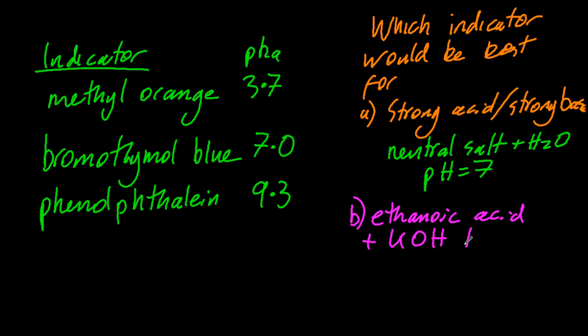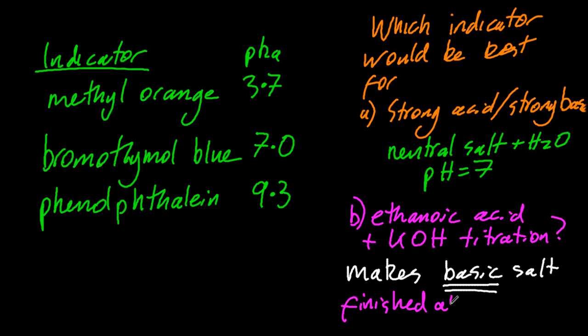So a weak acid and a strong base, well that's going to make a basic salt and water, so my equivalence point is going to be above 7, so I want my indicator to also change color above 7. And so that's phenolphthalein.